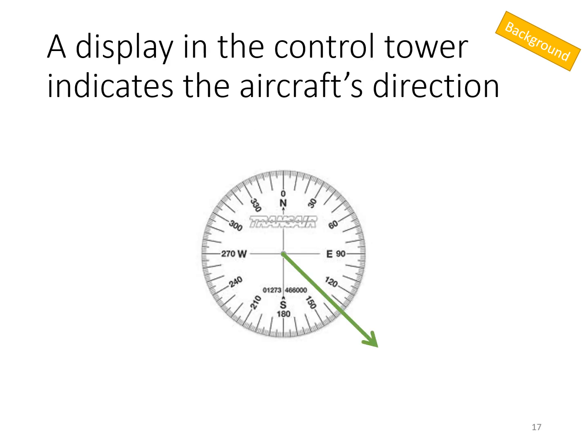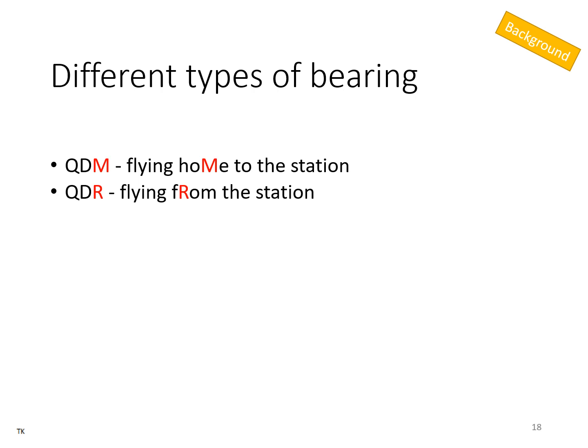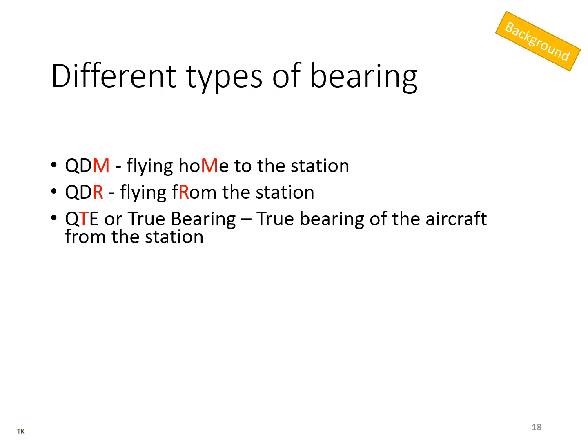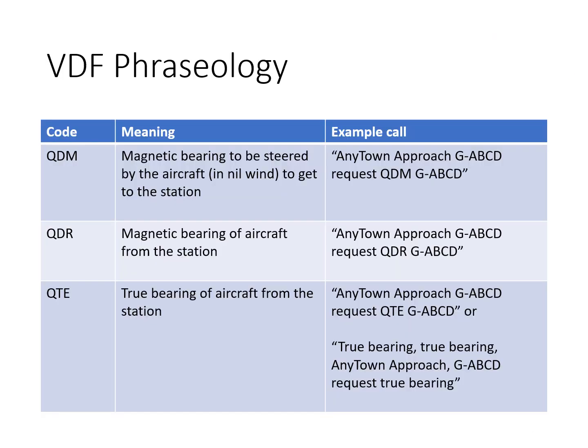There are three different bearings that you can ask for: a QDM, which is a bearing that will get you to the station; a QDR, which is a magnetic bearing from the station; and a QTE, which is a true bearing from the station. There are four different class accuracies — Bravo is plus or minus five degrees, for example. And lastly, here's a table of the different forms of VDF phraseology and some example calls.